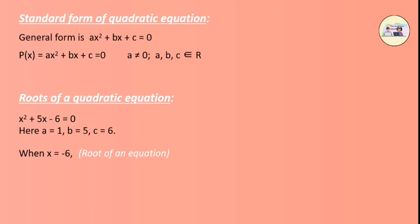Hence, when x equals minus 6, we get x squared plus 5x minus 6 equals 0. Before going to the exercises, do solve the solved examples, as doing so will help you easily solve questions 1 and 2 of the exercise.